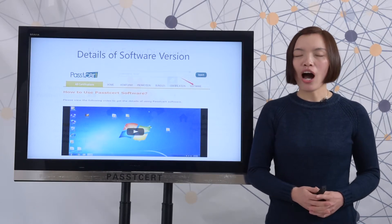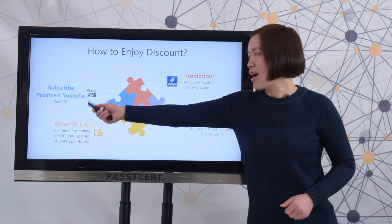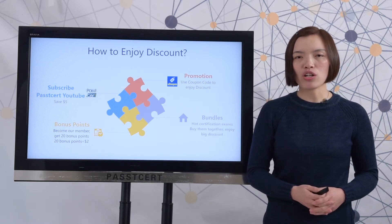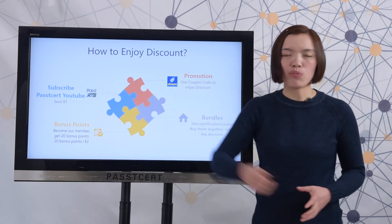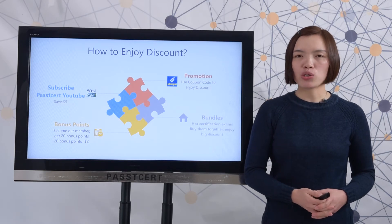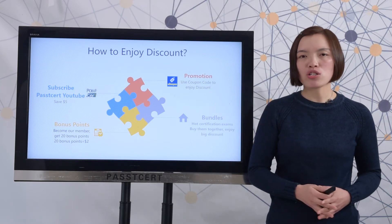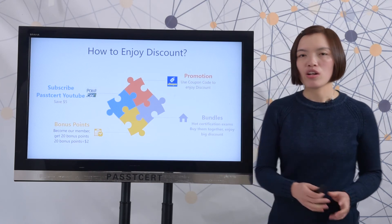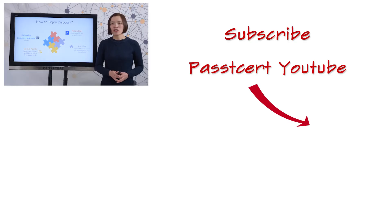Finally, let's review how to enjoy a discount at Pasty's 3rd.com. Subscribe to Pasty's 3rd YouTube and you can get a $5.50 coupon code after you send a screenshot to us. After you become our member, you can get 20 balance points, which are equal to $2. In our promotion page, we will show you our current sales promotions. You can use coupon codes to enjoy a discount. We also provide bundles for hot certification exams, so you can save much money on hot exams with our bundles.